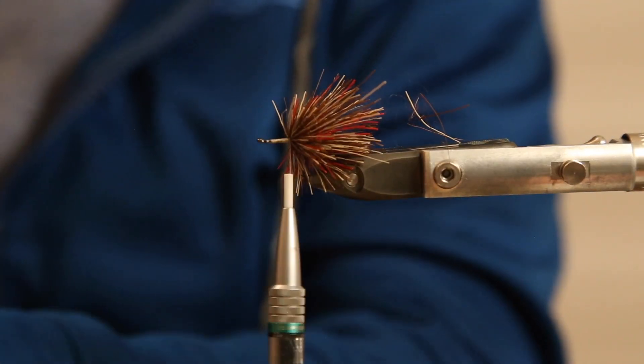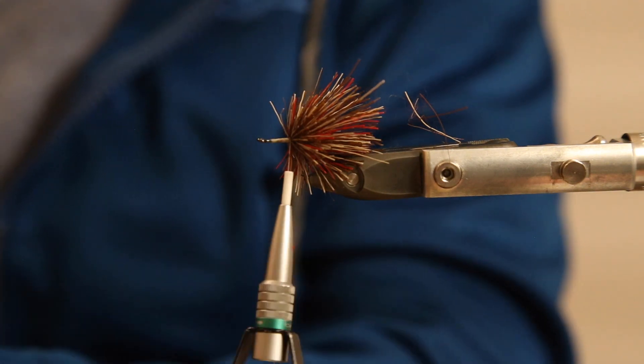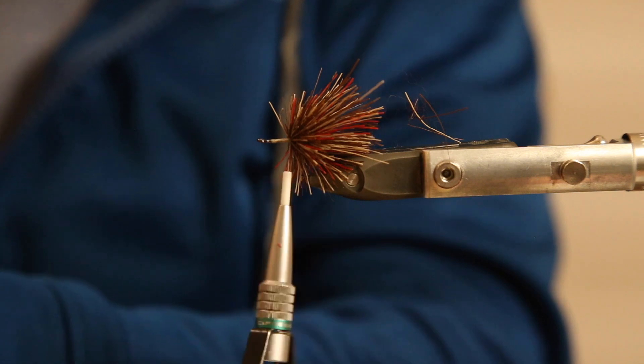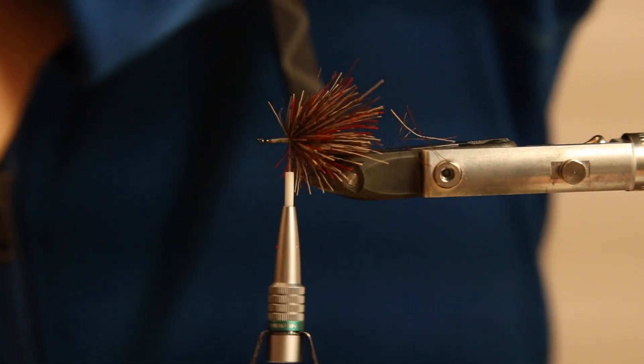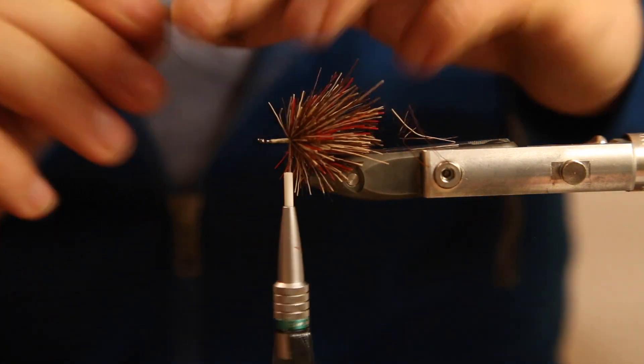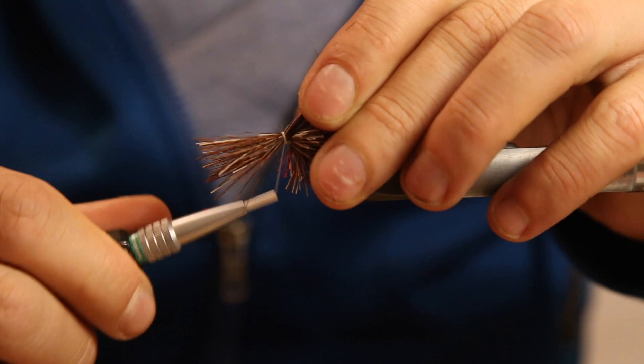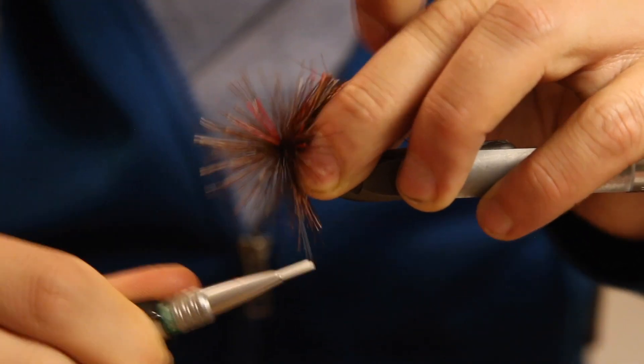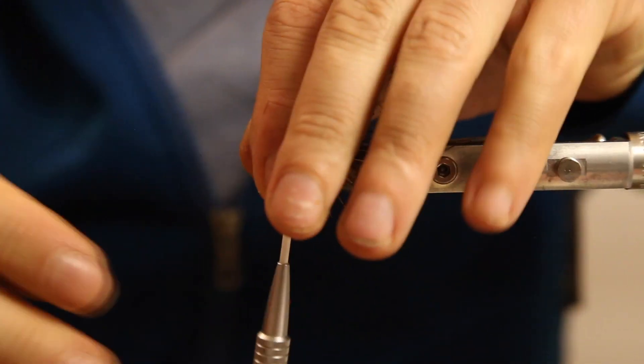Take the next clump and just keep stacking the deer hair. Use small amounts like that to get it a bit denser. It doesn't really have to look beautiful for the carp or be super dense like you would do with a deer hair popper.